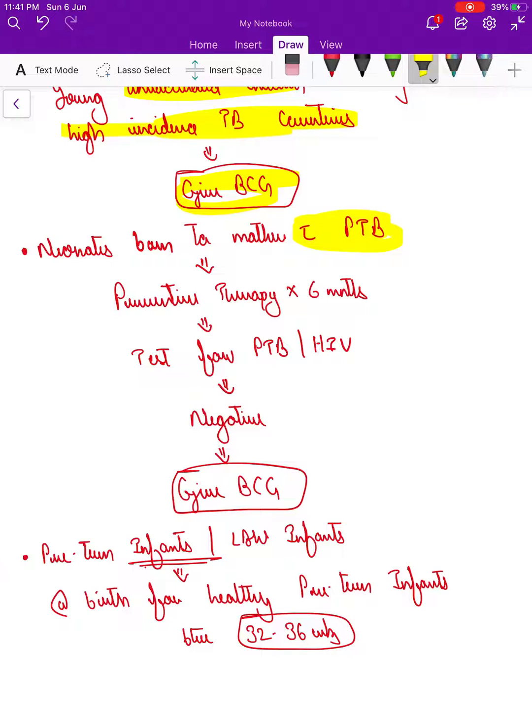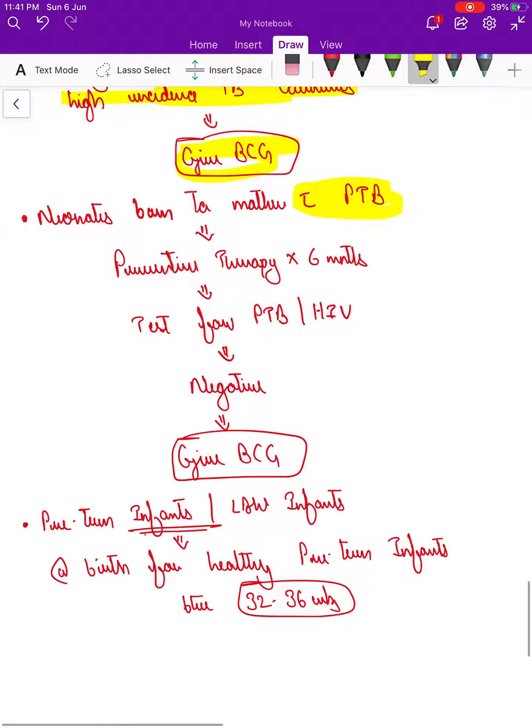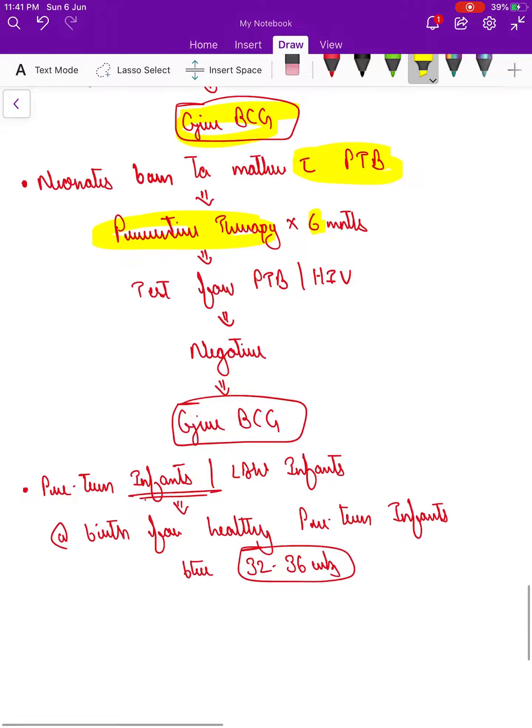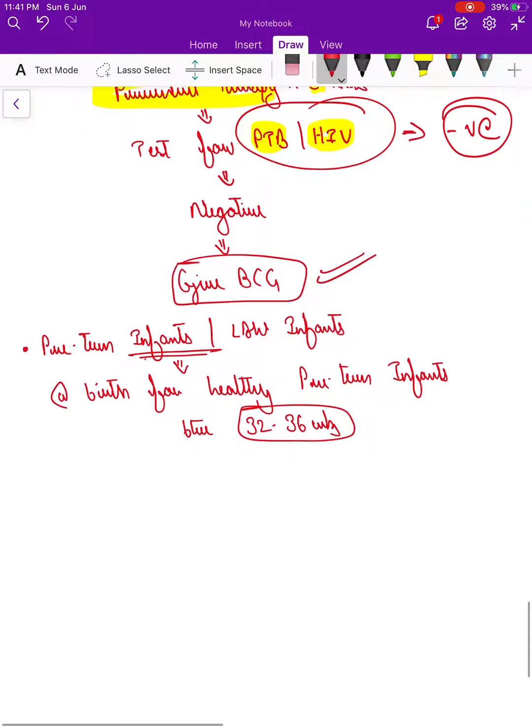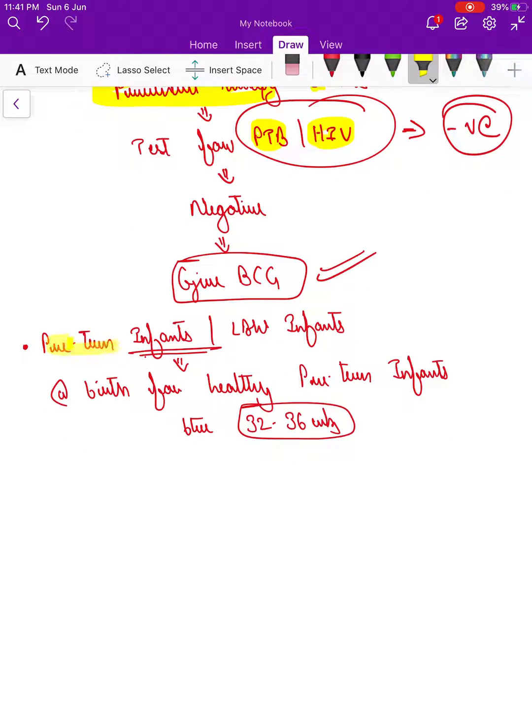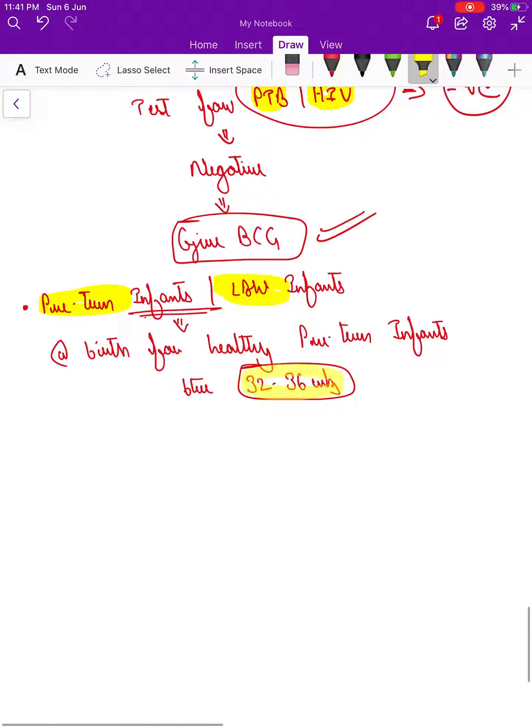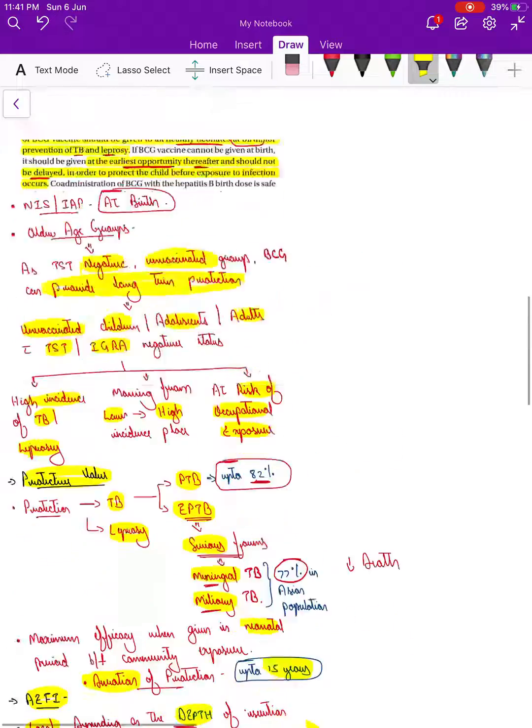If the neonate is born to a mother with pulmonary TB, what do we do? We initially give preventive therapy to the child for six months, then check the child for TB as well as HIV. If both statuses are negative, we go ahead and give BCG. If it's preterm infants or low birth weight infants and they are healthy and between 32 to 36 weeks period of gestation, we can go ahead and give the vaccination.